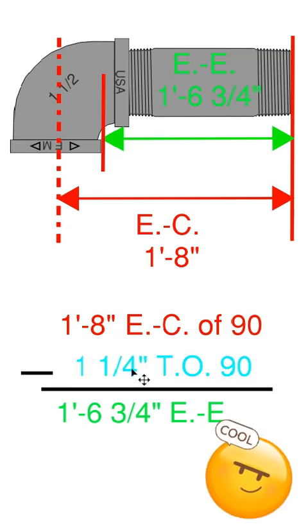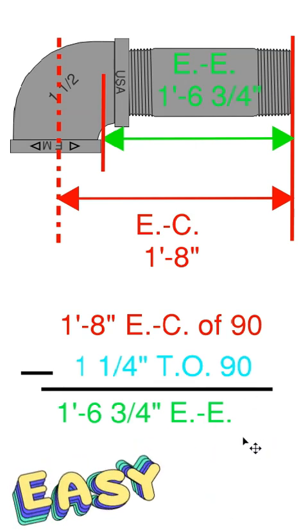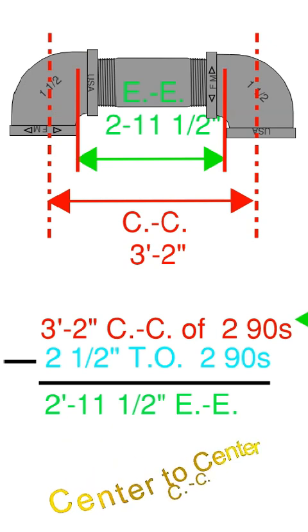So one foot eight minus the takeoff one and a quarter inches gives me one foot six and three quarters. And in this example we're going to take off for two nineties.